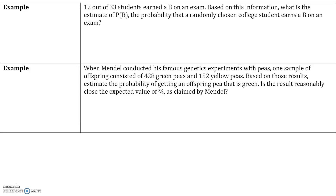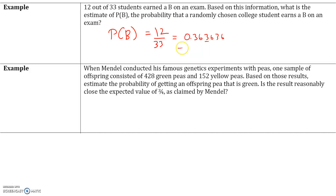Here's an example: twelve out of thirty-three students earned a B on an exam. Based on this information, what is the estimate of the probability of B — the probability that a randomly chosen student earns a B on the exam? We would say P(B) = 12/33, which in decimal form is approximately 0.364 when rounded to the thousandths place.